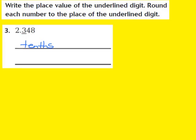The second part of the directions says to round to the place of the underlined digit. So I know that I have to round my decimal number to the tenths place. My first step is to locate the digit in the place you want to round. The digit in the tenths place is my 3, so I'm going to put a circle around my 3. Step 2 says to underline the digit to the right of the circled digit. My 4 is the number to the right of my circled digit.